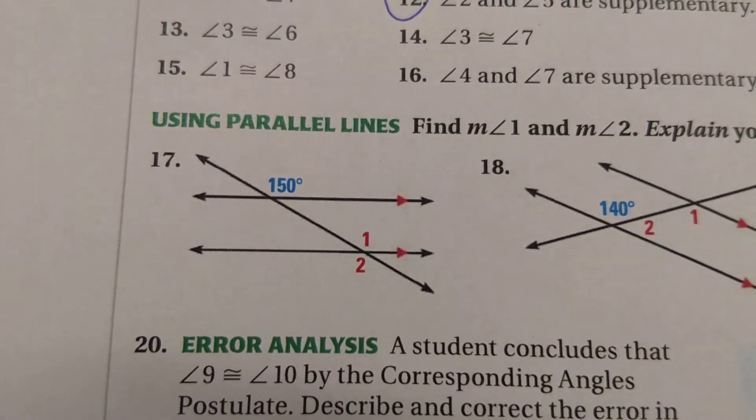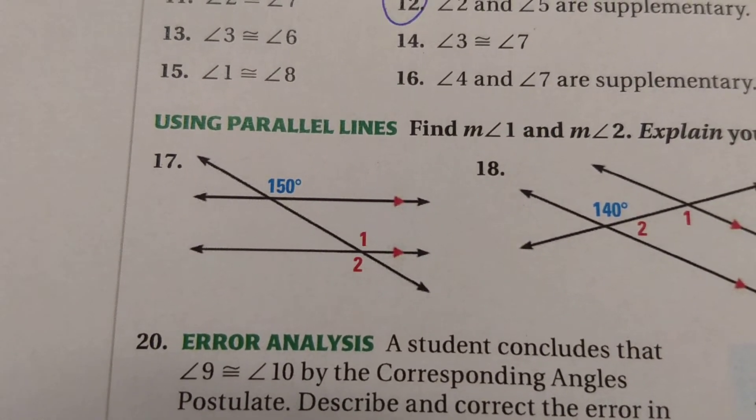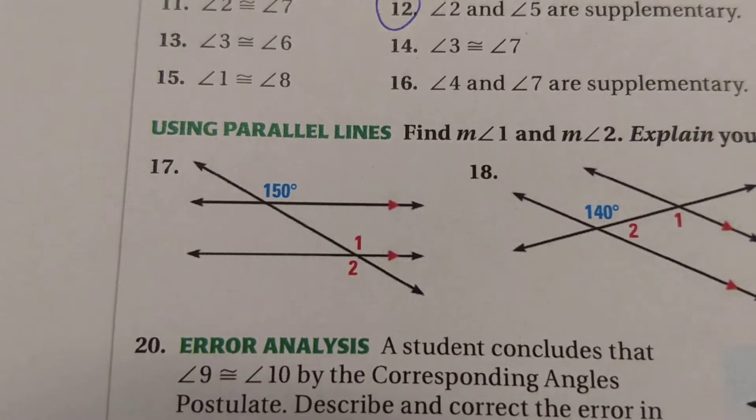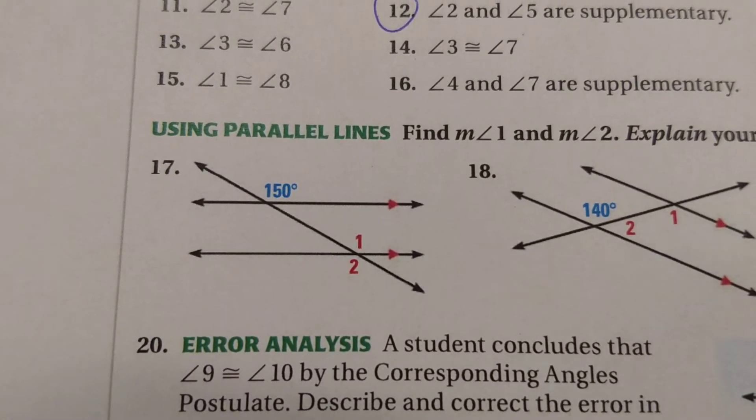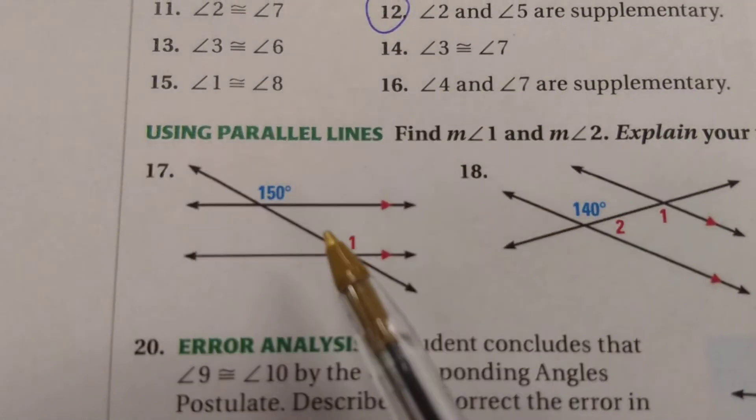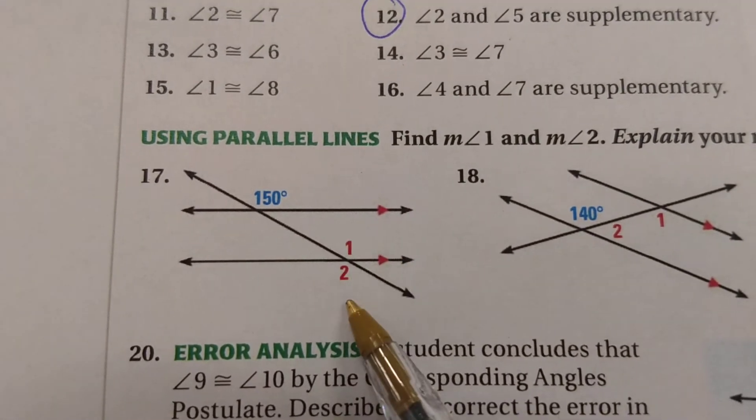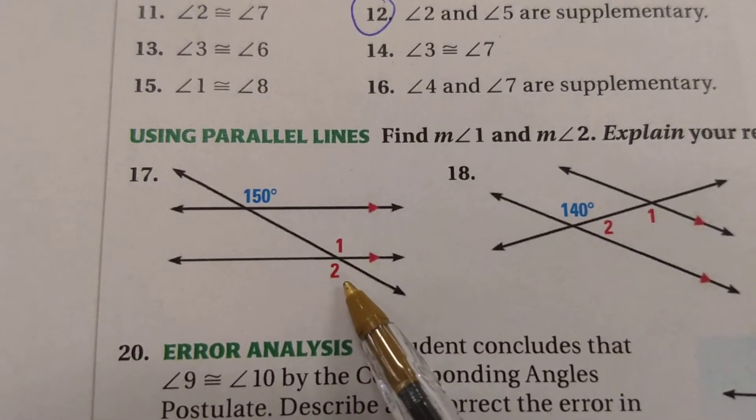When you understand the angle relationships, you can start figuring out different measurements based on the given diagram. And we're looking here for angles 1 and angle 2, what those measurements must have to be.